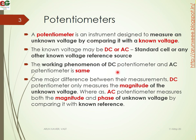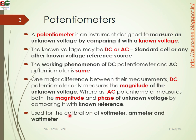The working of DC potentiometers and AC potentiometers is the same. One major difference is that for DC potentiometers it measures only the magnitude of the unknown voltage, but for AC potentiometers it measures both the magnitude and the phase of the unknown voltage.